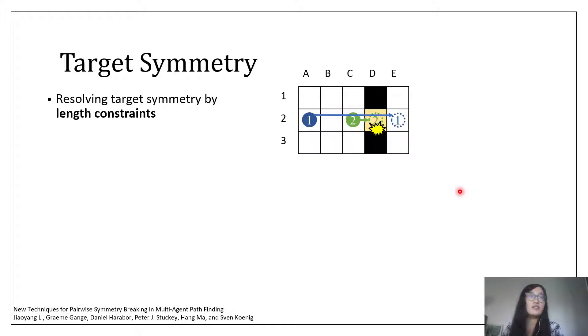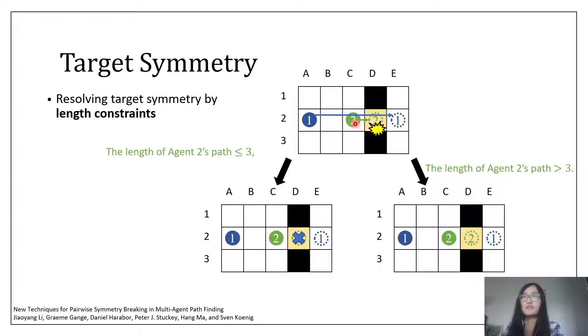Like corridor symmetry, we want to design a pair of constraints that can resolve all collisions between these two agents immediately. So instead of branching on the colliding location directly, we branch on the path length of the second agent. We say that the path length of the second agent should be either no larger than 3 or larger than 3.